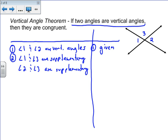And we know these are supplementary because they are linear pairs. One of the important postulates that we usually talk about is that linear pairs are supplementary. So now that we've shown that one and three are supplementary, and two and three are supplementary...